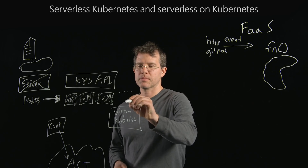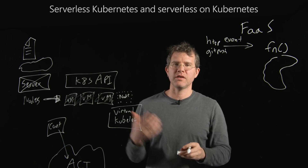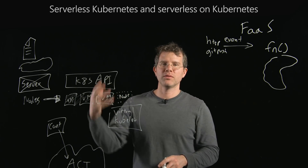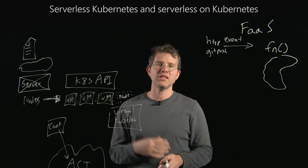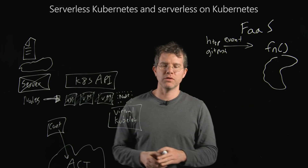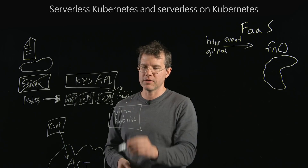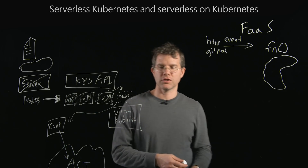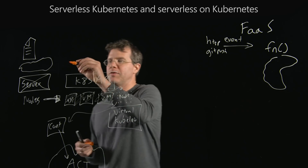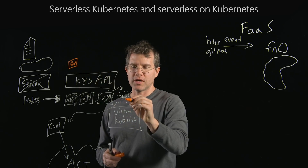Kubernetes, as it's currently implemented, really needs to have nodes. The Kubernetes API itself separates you from the machines, but the manner in which the Kubernetes API is implemented is attached to the idea of there being nodes. The Virtual Kubelet provides a virtual node that the Kubernetes API knows about, and that is bound to the serverless container infrastructure. When you say you'd like to run a pod on top of the Kubernetes API, that pod is ultimately scheduled onto this virtual node.